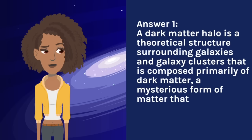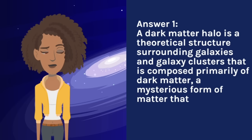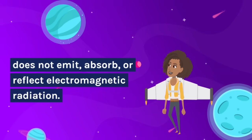A dark matter halo is a theoretical structure surrounding galaxies and galaxy clusters that is composed primarily of dark matter, a form of matter that does not emit, absorb, or reflect electromagnetic radiation.